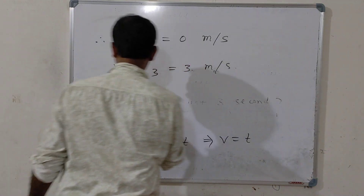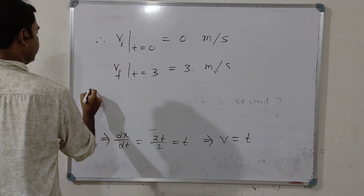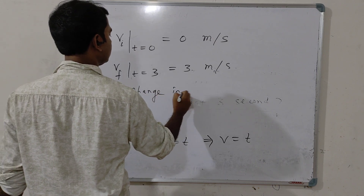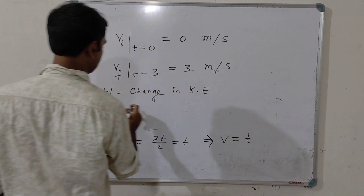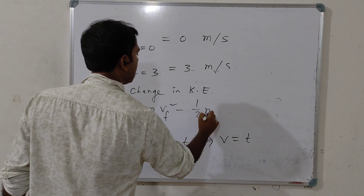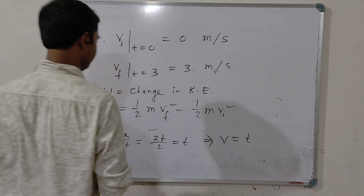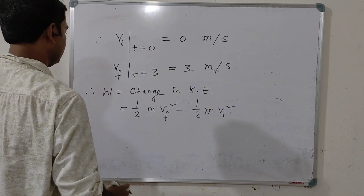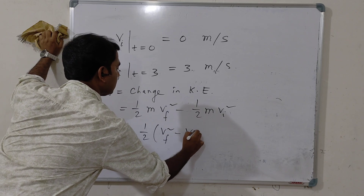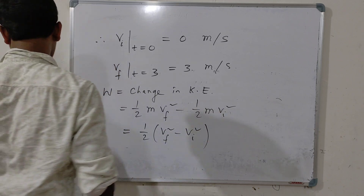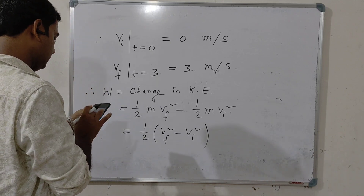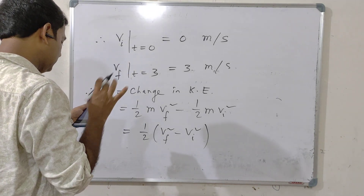So, what will be the work done? Work done equals change in kinetic energy, which mathematically is half m Vf squared minus half m Vi squared, or half m times (Vf squared minus Vi squared). The given value of mass is 3 kg.